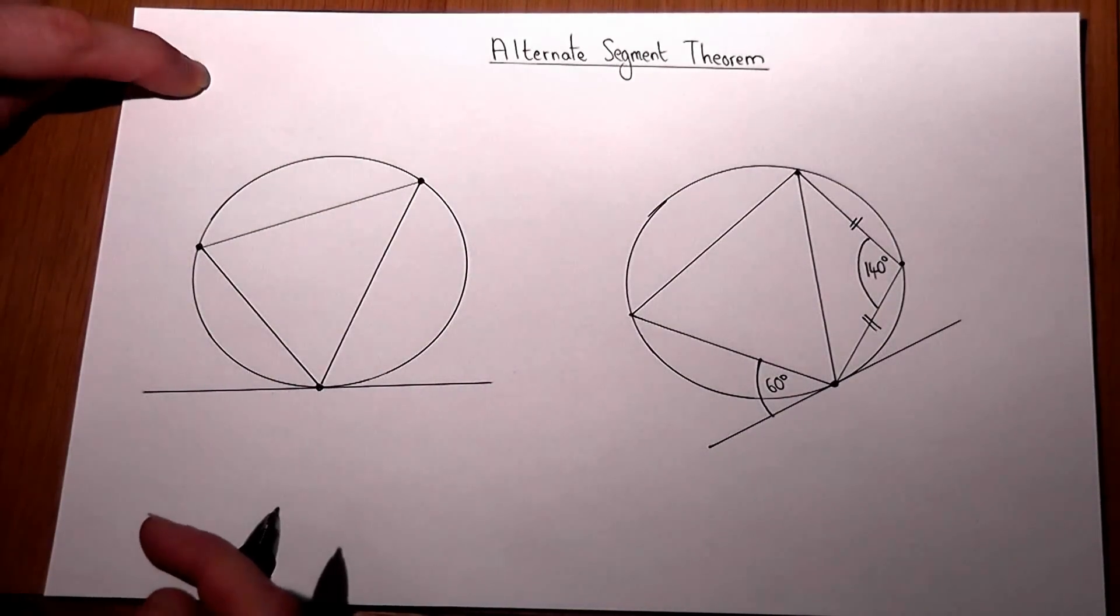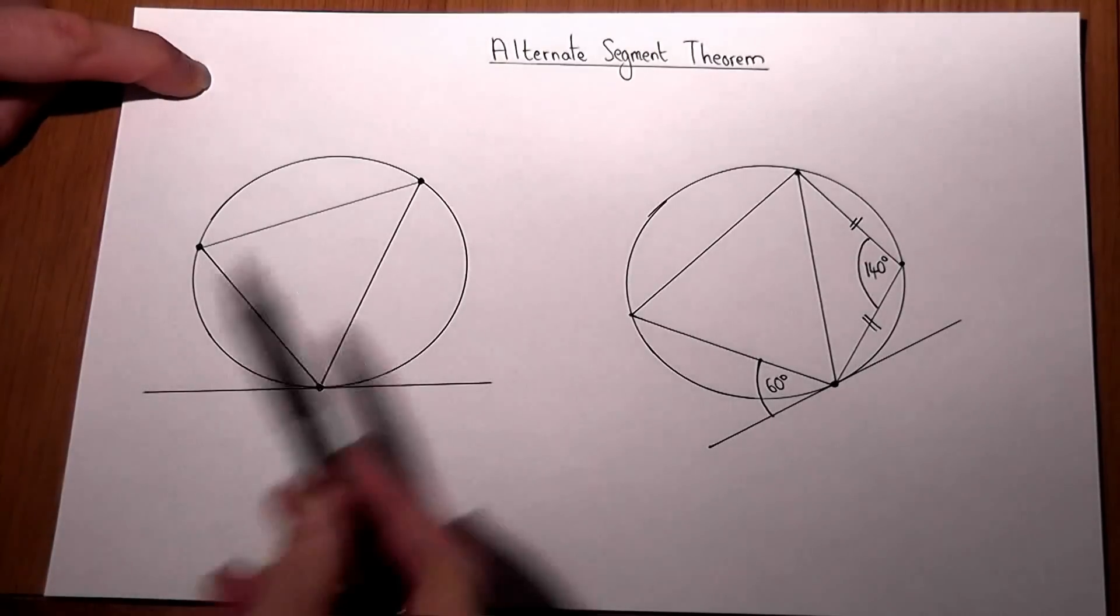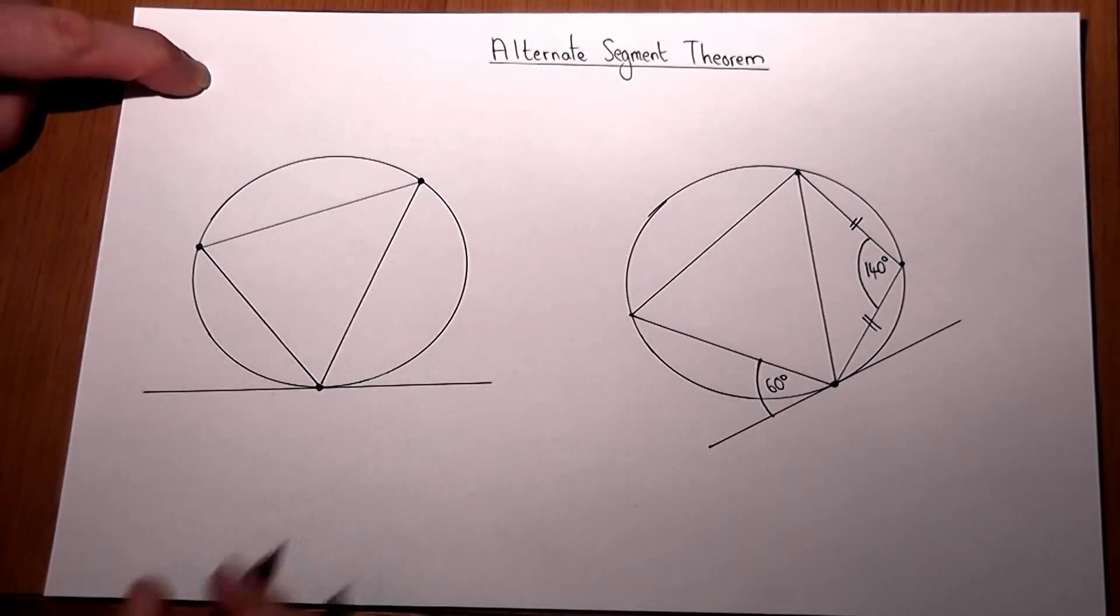The one main circle theorem that you must be able to name in the exam is called the alternate segment theorem. And it's quite simple.